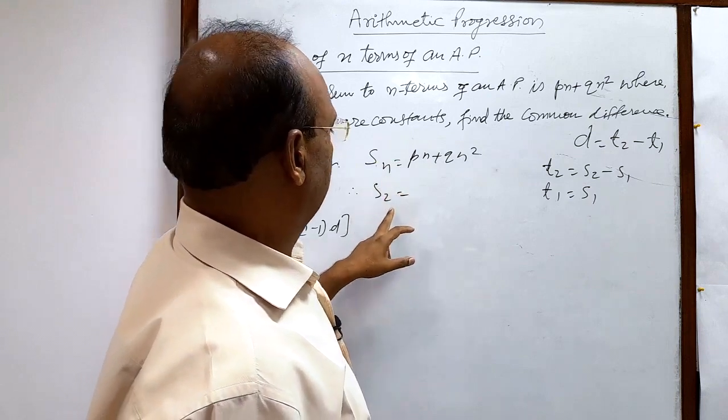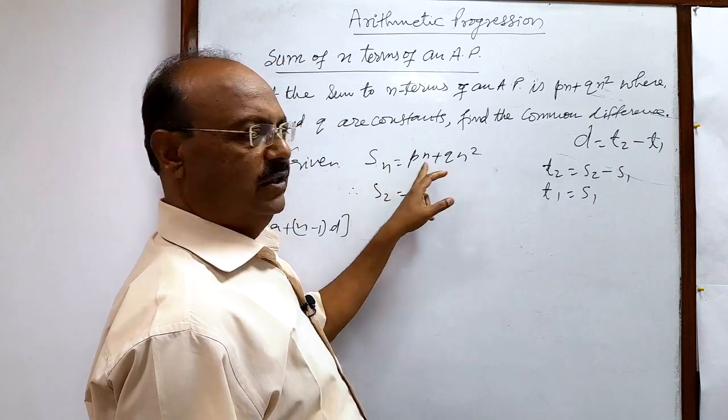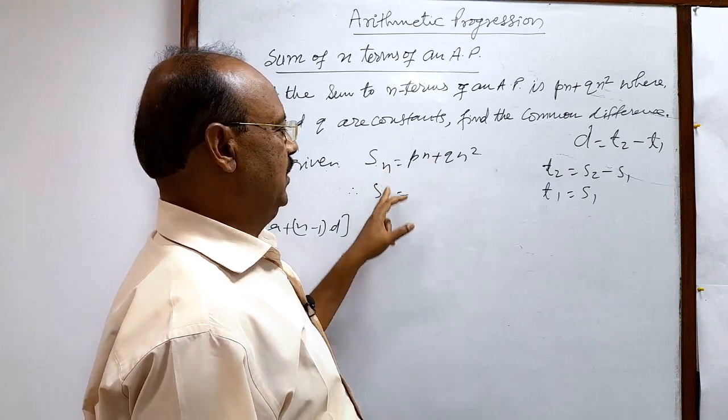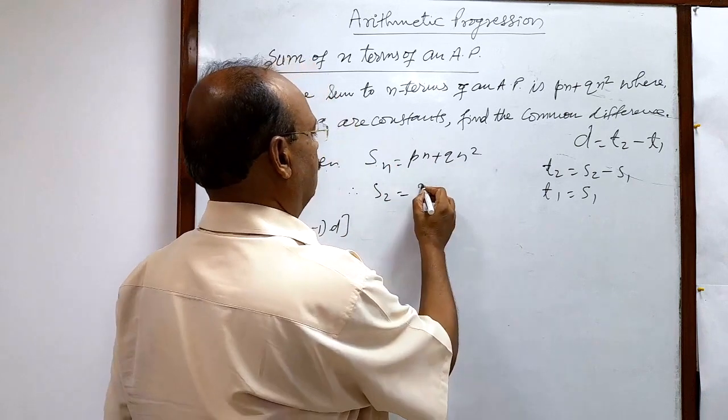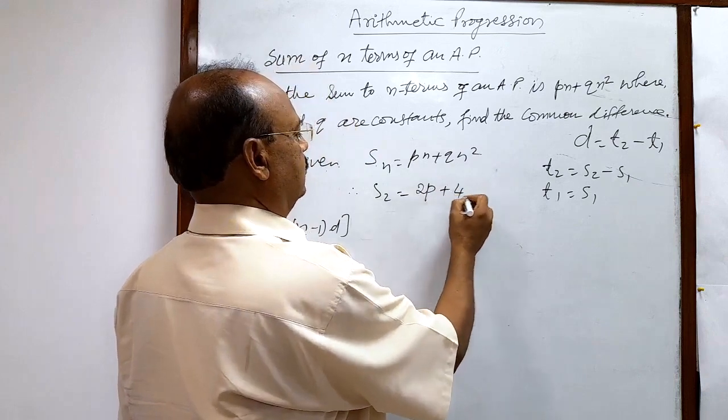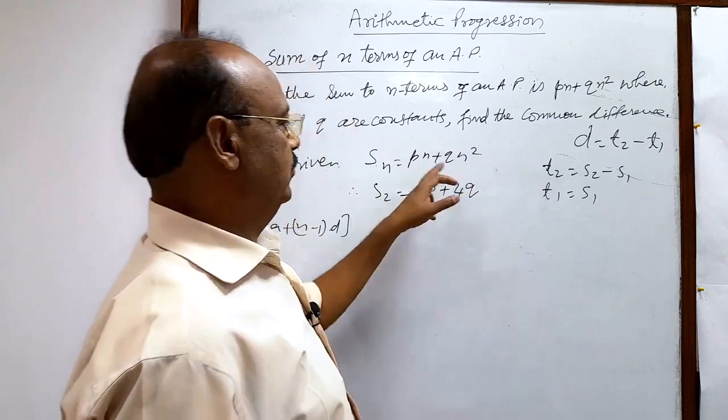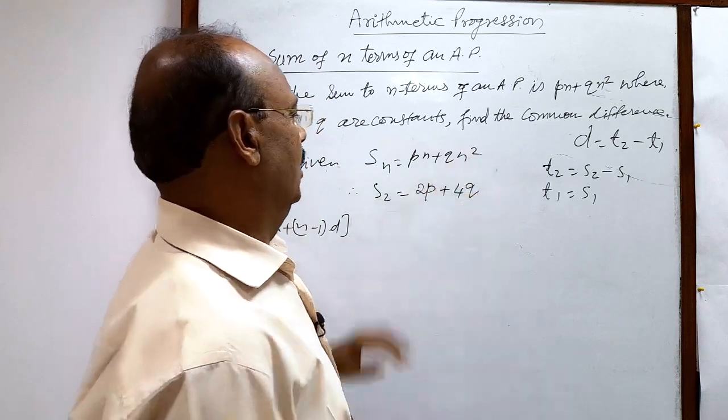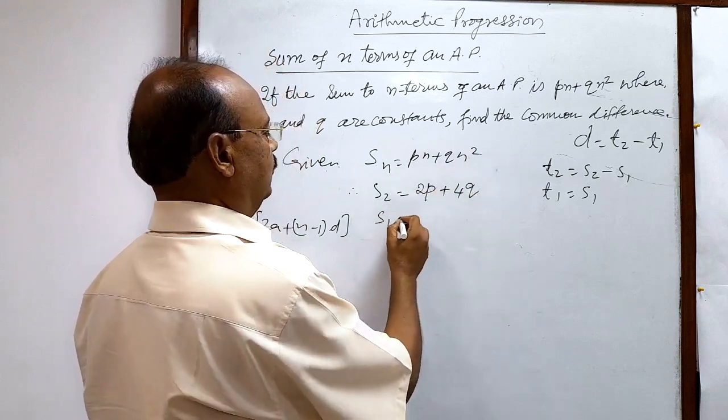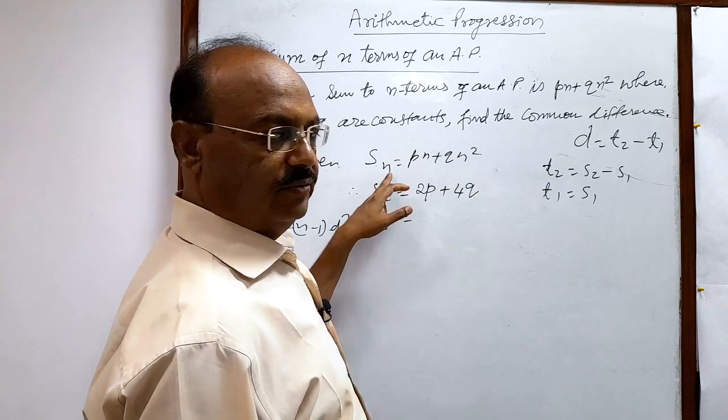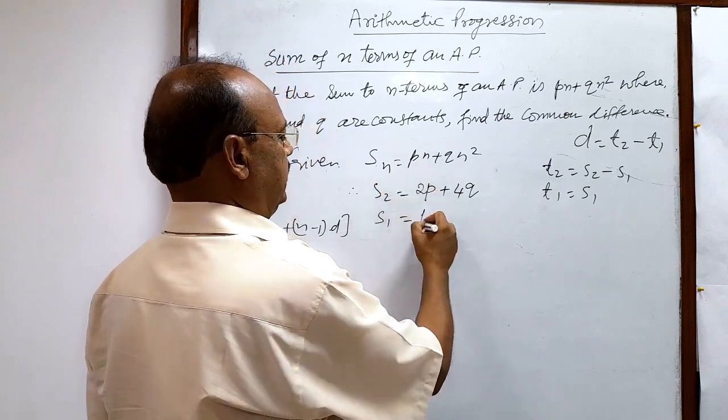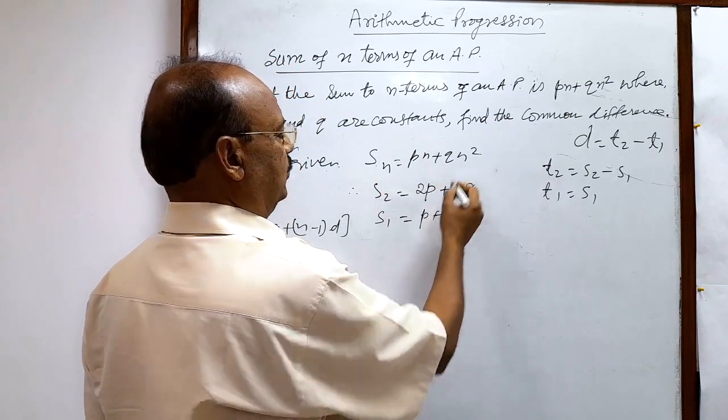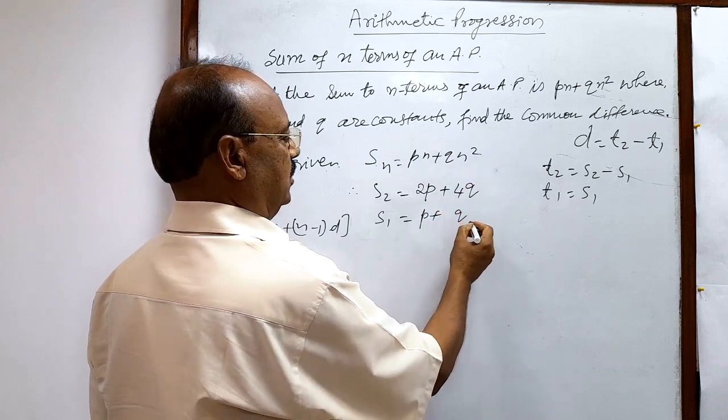S2 will be how much? In place of n we have to put 2. So right hand side will be 2p plus 4q, 2 square is 4 into q. And S1 is equal to how much? In place of n we have to put 1. So p into 1 that is p plus q into 1 square that is q.